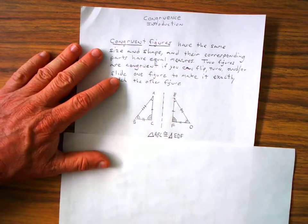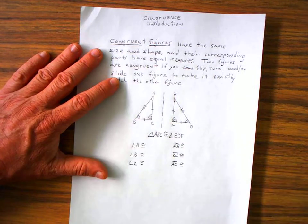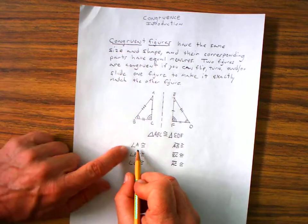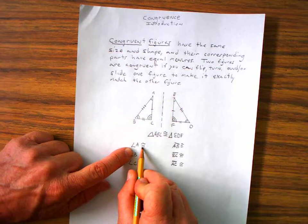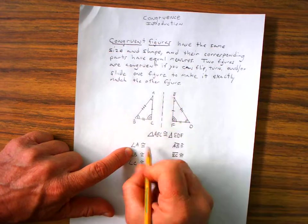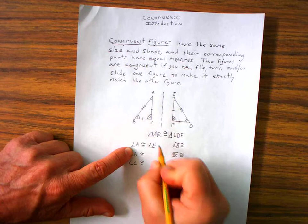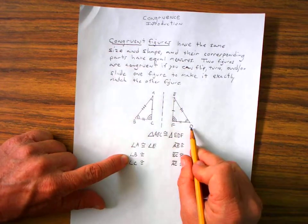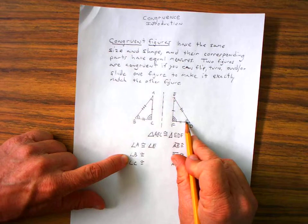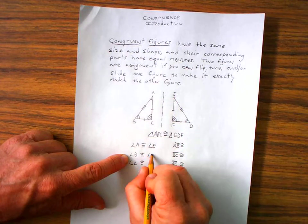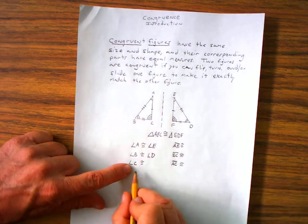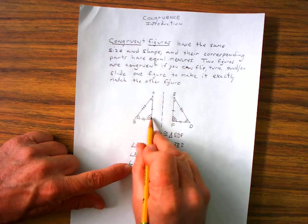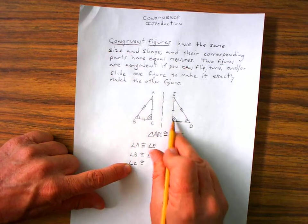So let's go down here and I've written a few statements where I say angle A is congruent to angle E and I would write angle E. Angle B is congruent to angle D. So I'd write angle D. Angle C right here is congruent to angle F.